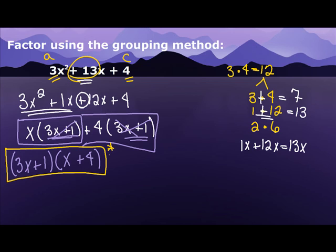But I'm going to make sure. I'm going to FOIL this. So 3x times x is 3x squared. Then my outside, 3x times 4, is 12x. My inside, 1 times x is 1x. And 1 times 4 is 4.